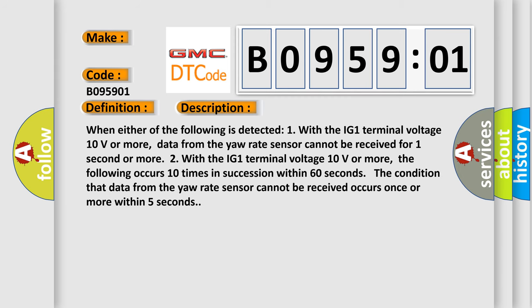When either of the following is detected: one, with the IG1 terminal voltage 10 volts or more, data from the yaw rate sensor cannot be received for one second or more. Two, with the IG1 terminal voltage 10 volts or more, the following occurs 10 times in succession within 60 seconds. The condition that data from the yaw rate sensor cannot be received occurs once or more within five seconds.